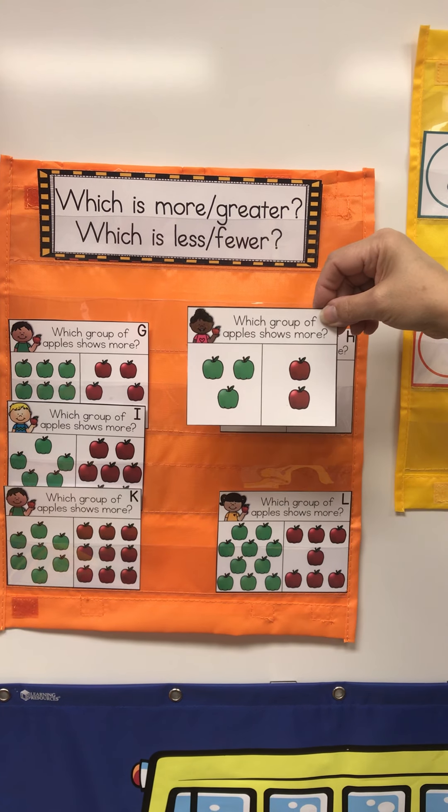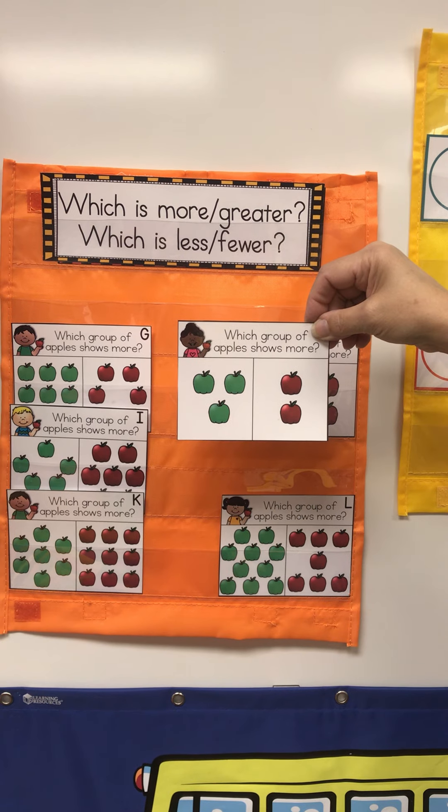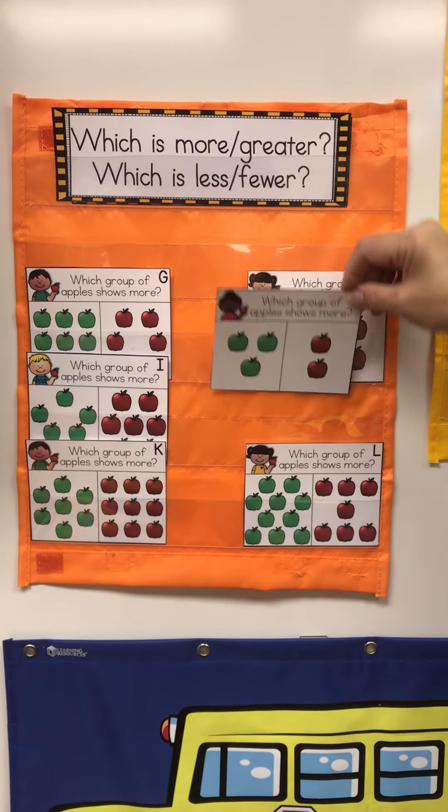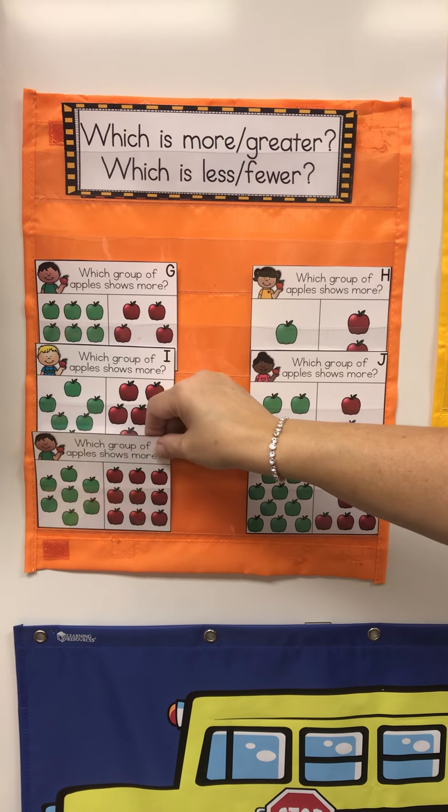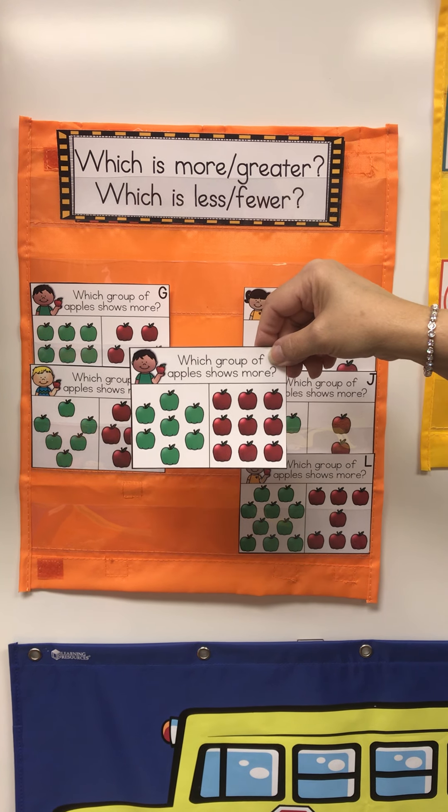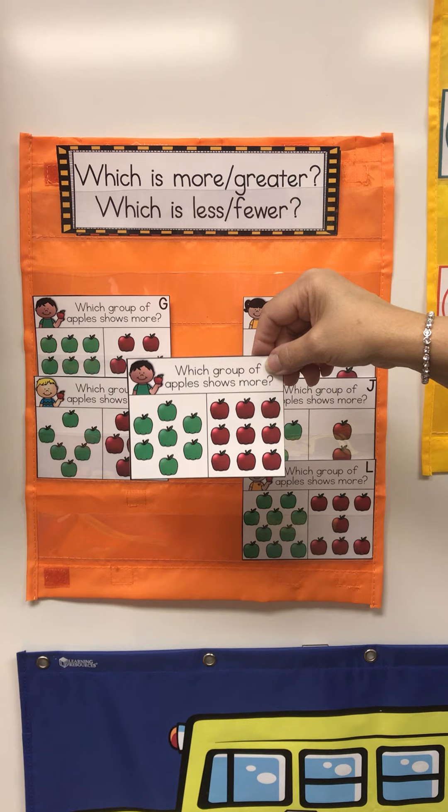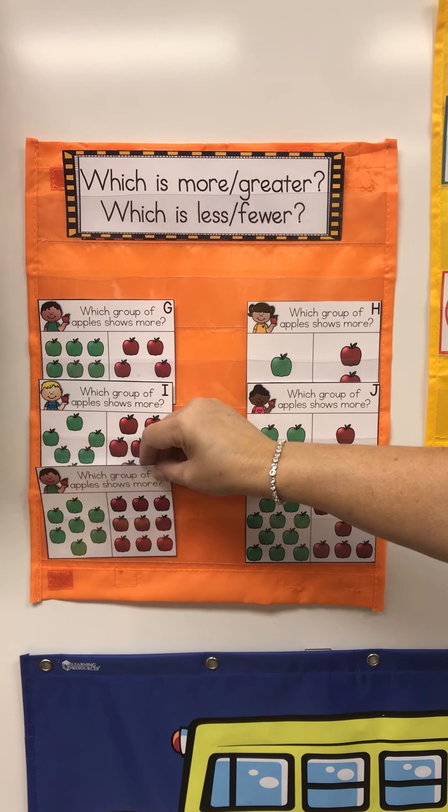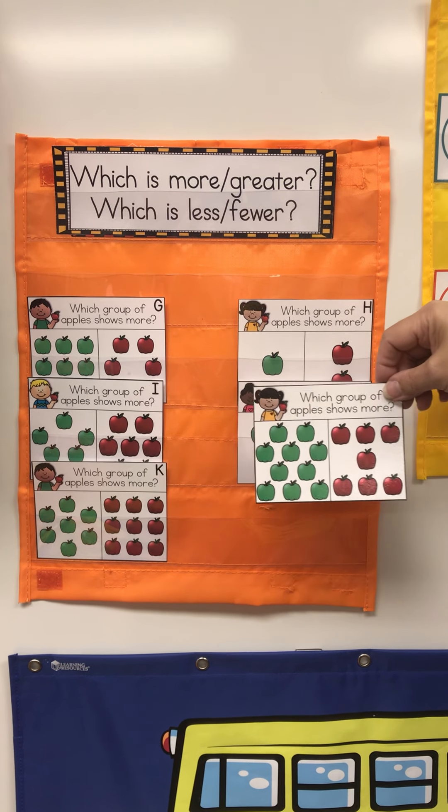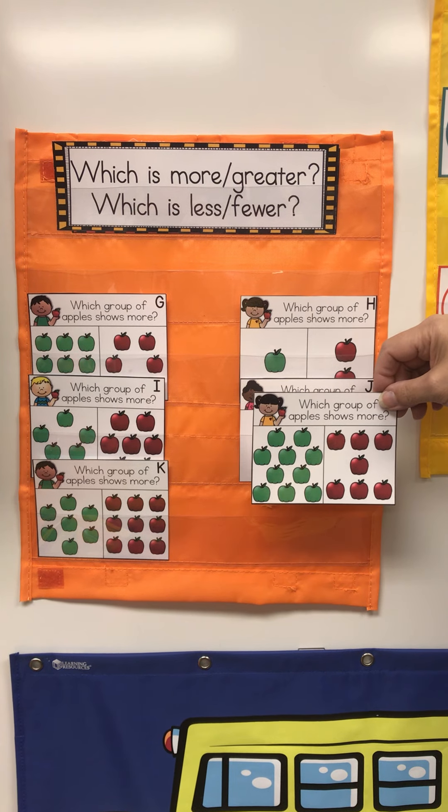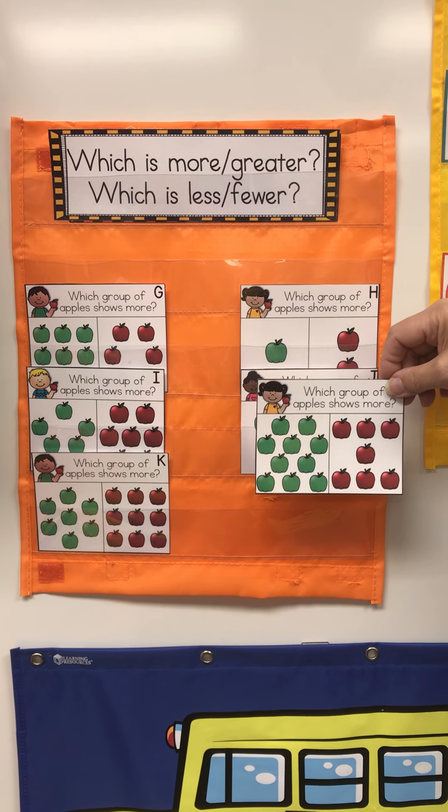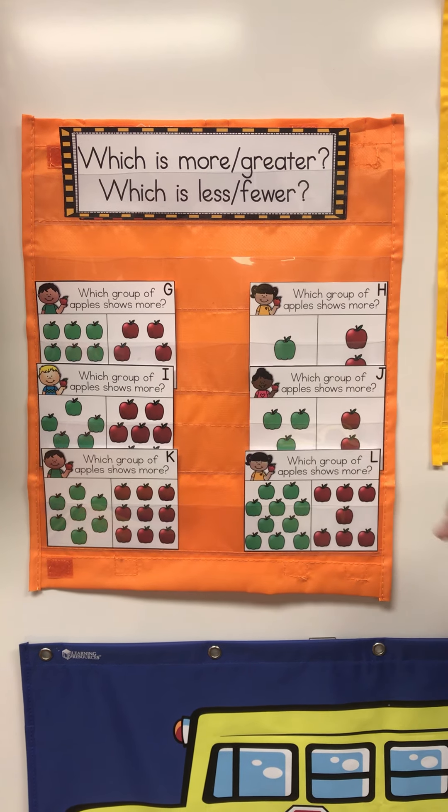Which group is greater, green or red? Green is greater. Which group is greater? Can you subitize those? I don't know. Which group is greater? Red. Which group is greater? Which group has more, green or red? Green. All right.